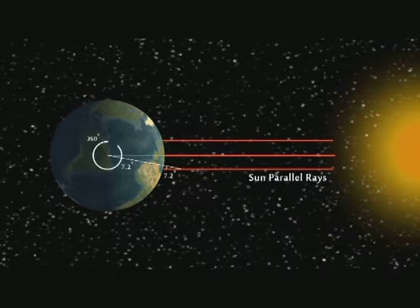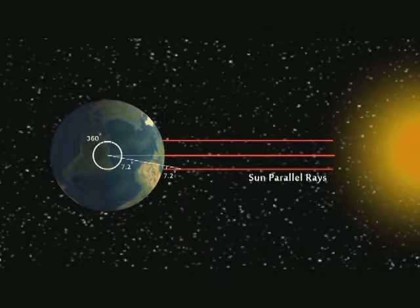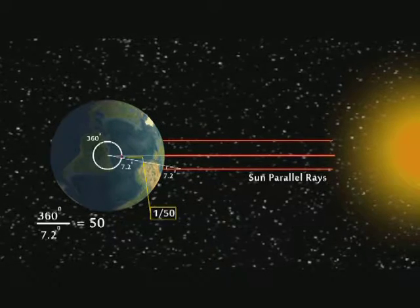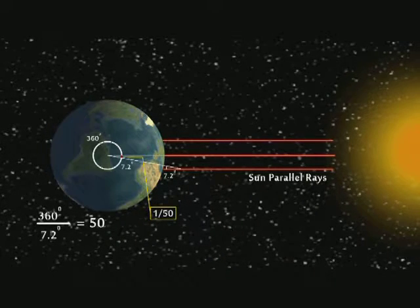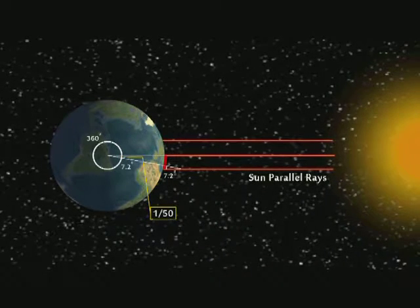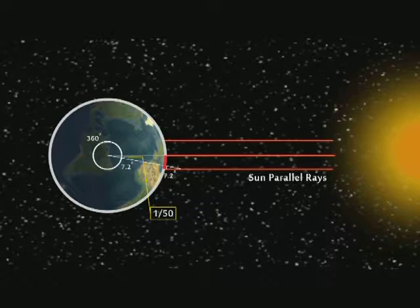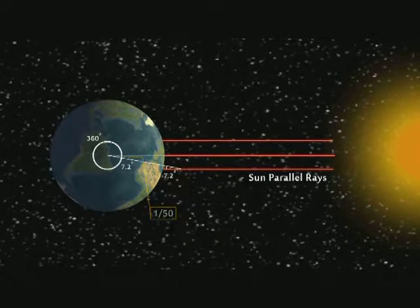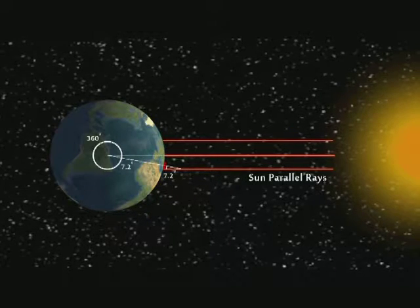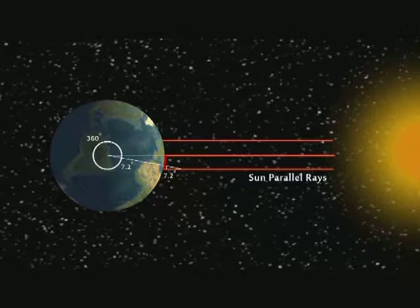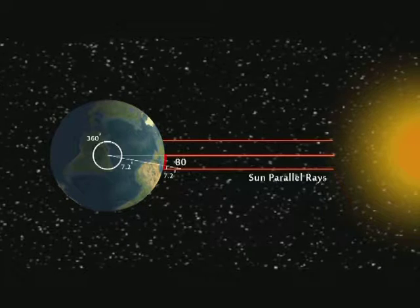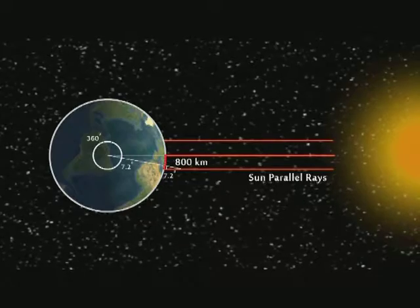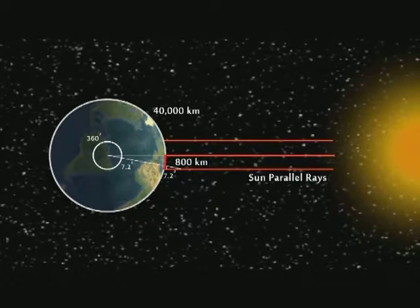The angle made was of 7.2 degrees. The full angle at the centre of the earth is 360 degrees. So 360 by 7.2 is equal to 50. So this angle is 1/50th of the whole angle. Then this distance is 1/50th of the circumference of the earth. What is this distance? Eratosthenes actually got someone to walk the distance and counted their steps. He worked out the distance to be 800 kilometres. Now the circumference of the earth is 50 times this, which is 40,000 kilometres.